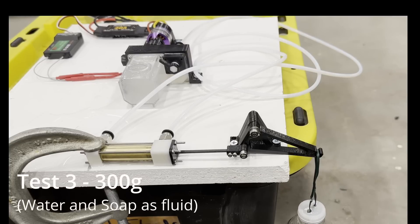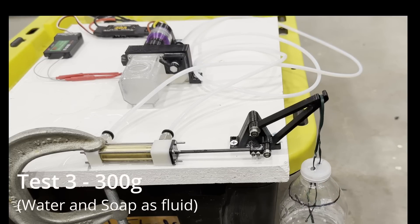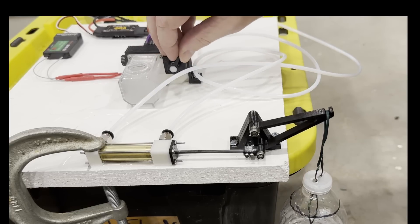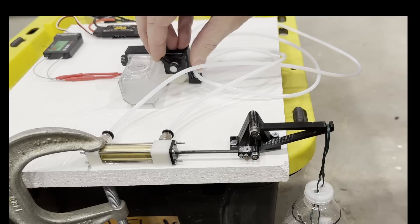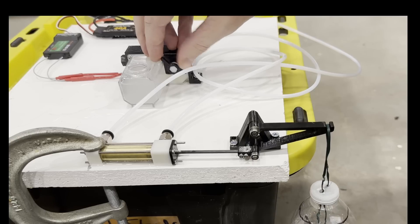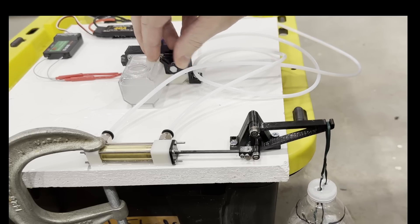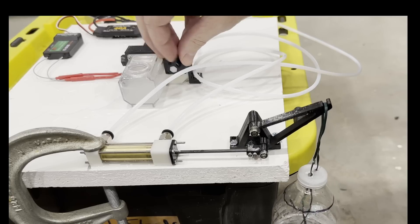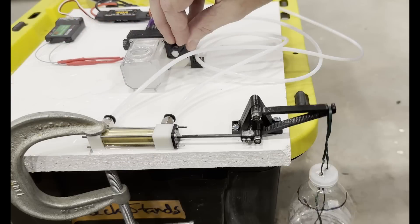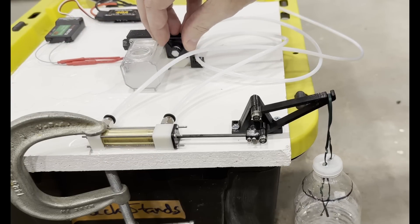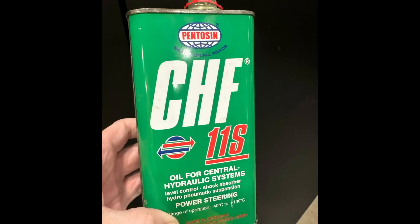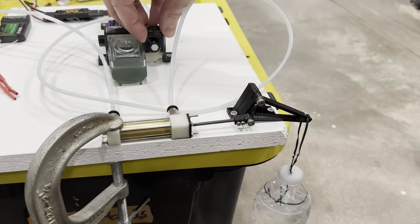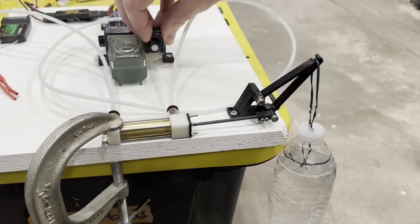So the first couple tests weren't super impressive on the amount of pressure I was creating out of the pump, and it occurred to me that I wasn't using an actual hydraulic oil, and I just looked it up, the thickness of this CHF11, which is an old BMW power steering fluid. It's about 30 times the thickness of water, so that's a substantial difference in viscosity, so we're going to go ahead and try this and see what happens and go for it.